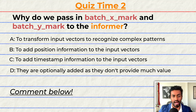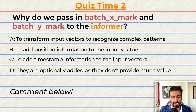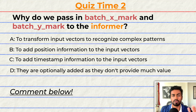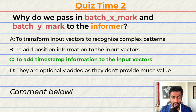Quiz time! Why do we pass in batch_x_mark and batch_y_mark into the Informer? A) To transform the vectors to recognize complex patterns. B) To add position-level information to the input vectors. C) To add timestamp-level information to the input vectors. Or D) They are optionally added as they don't provide much value. Note that multiple options may be correct. The correct answer is C. But can you tell me why? Comment your reasoning below. That's it for quiz two and pass two — keep paying attention because I'll be back to quiz you.